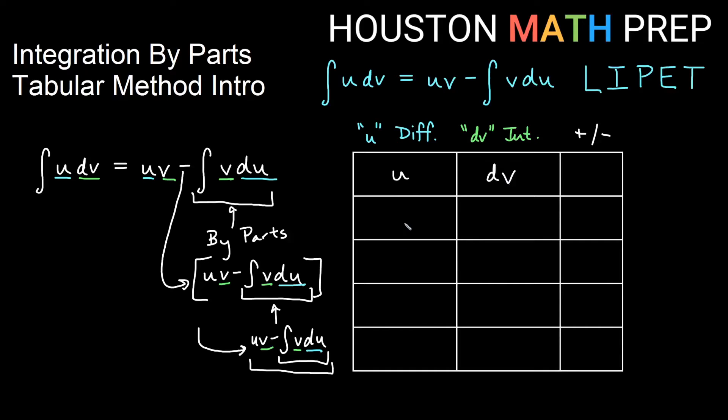We'll take the derivatives as we go down this column, we'll take antiderivatives of dv as we go down this column. And in this column, we're simply going to assign a positive one and negative one alternating to represent the sign change of distributing the minus as we repeatedly integrate by parts.